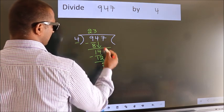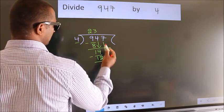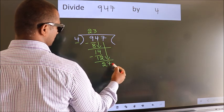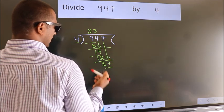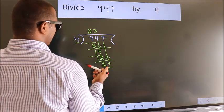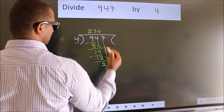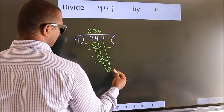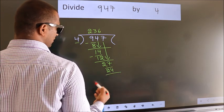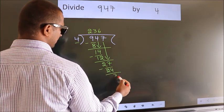After this, bring down the beside number. So 7 down. So 27. A number close to 27 in 4 table is 4, 6, 24. Now we subtract. We get 3.